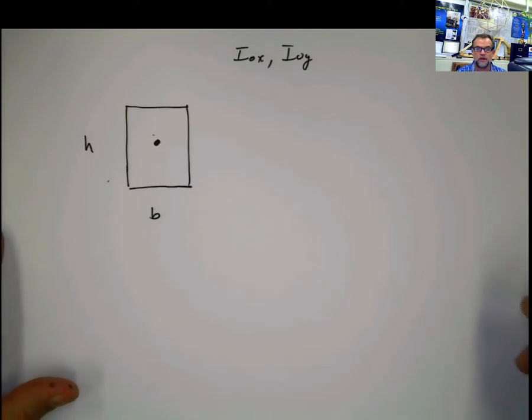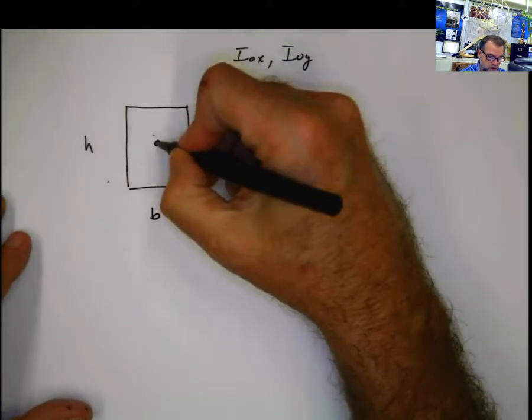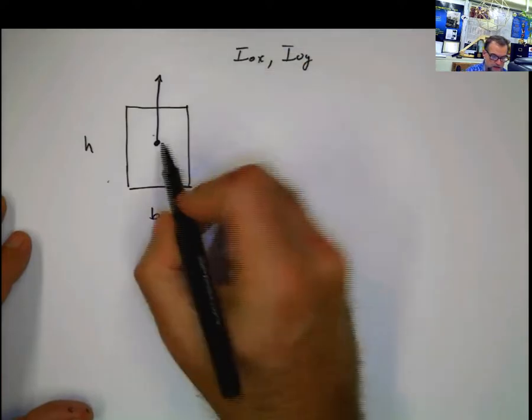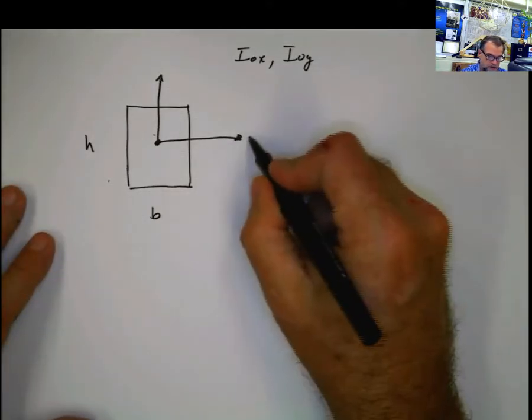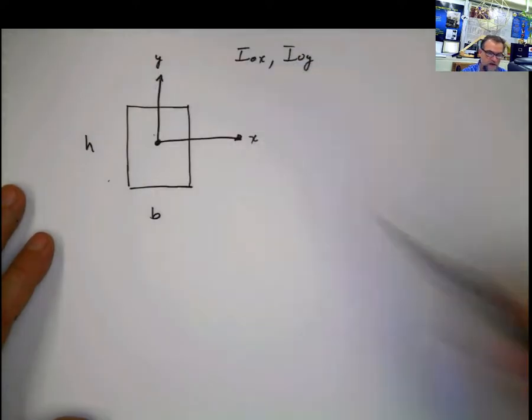And that's one of the most important things that you have to remember. So because we are doing it with respect to the centroid and we know where the center of the rectangular shape is, which is at the center, we're going to place our axis of reference at the center.